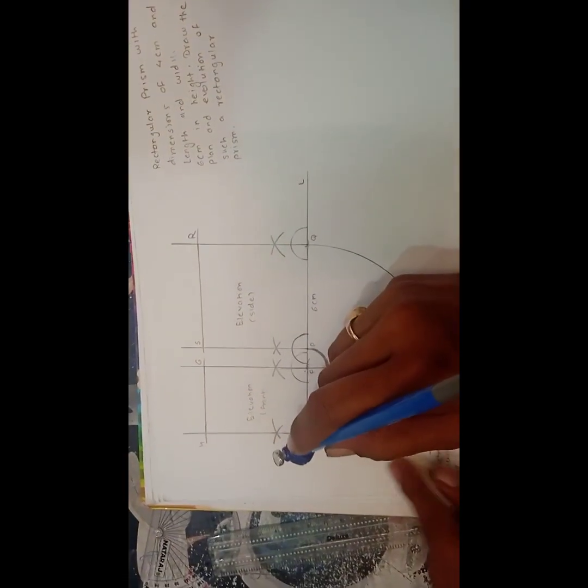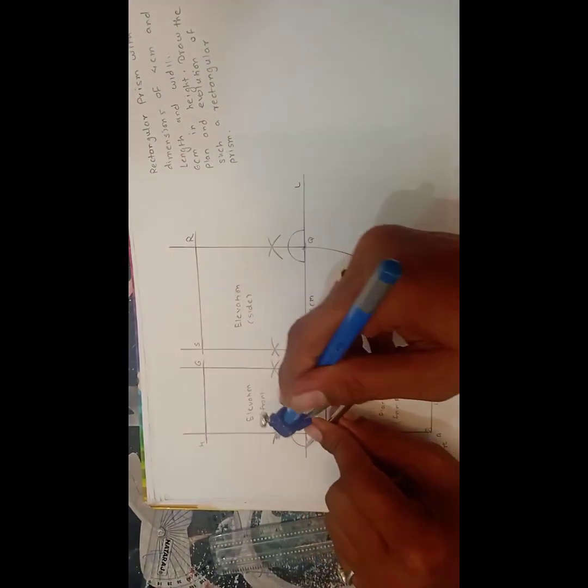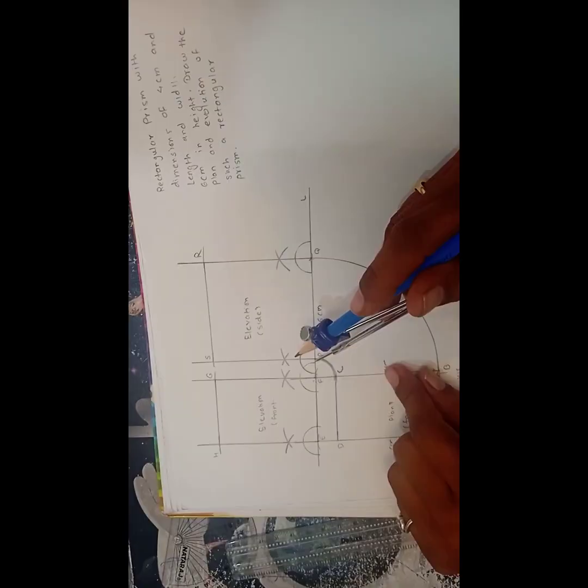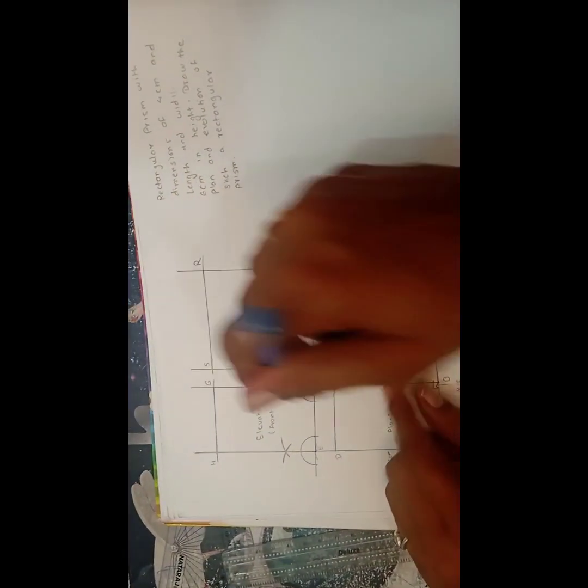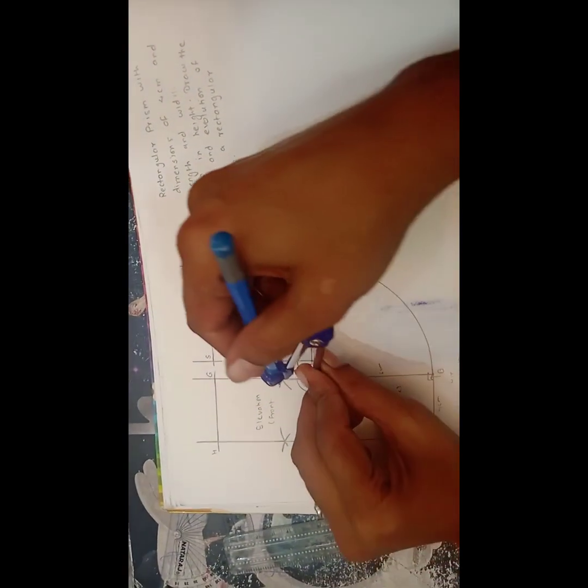Again putting on here and placing taking more than half distance. Draw an arc. Similarly come on the F point. Taking the arc. Put in two arcs over here, 1 and 2.